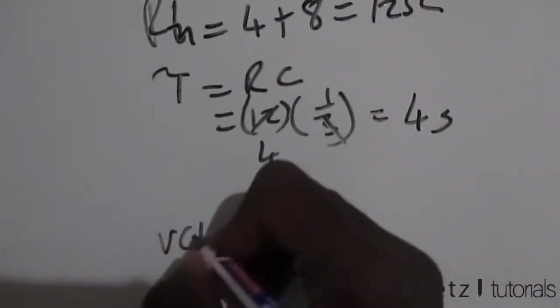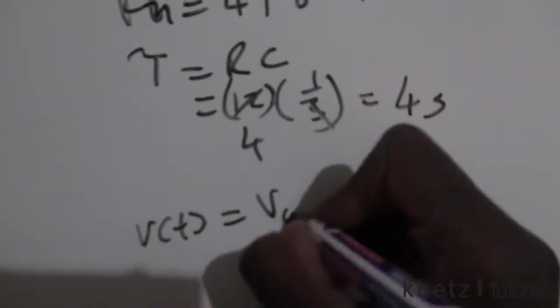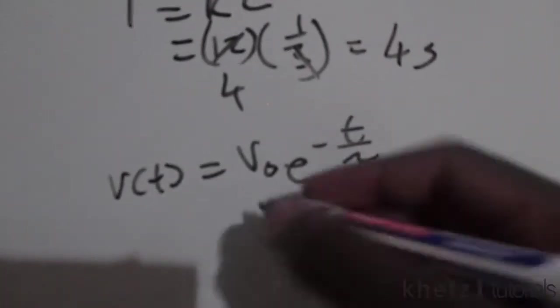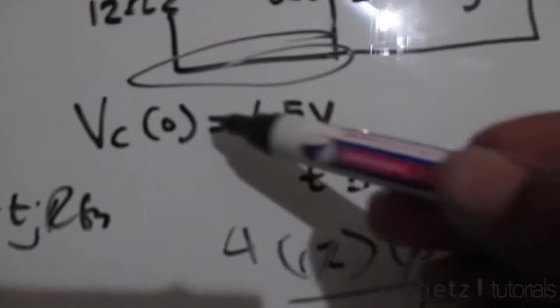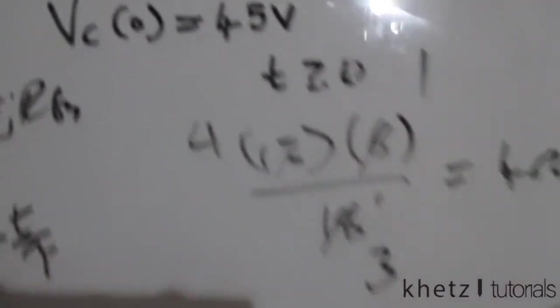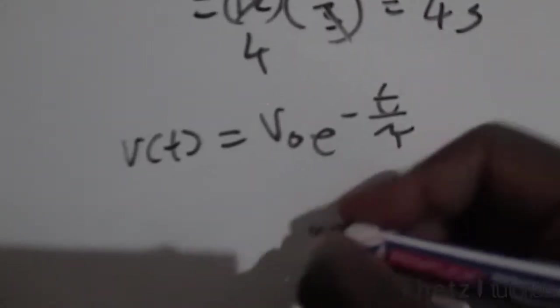Coming back to this formula which says Vc equals the initial voltage multiplied by this decay rate, we're going to put the initial which we're given in the question. The initial Vc is already given to us in the question as 45 volts.